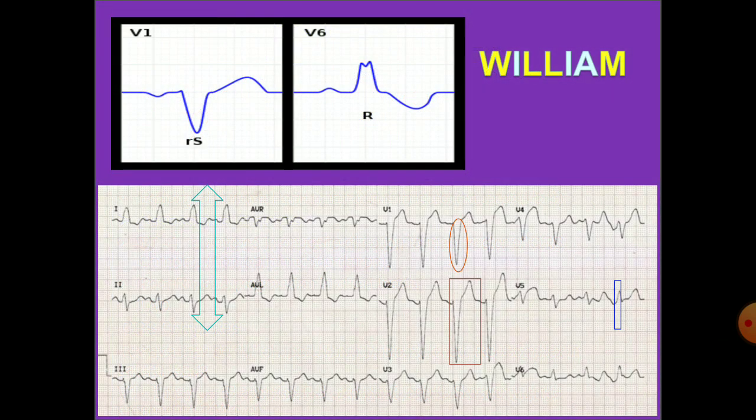For Left Bundle Branch Block, we have a mnemonic: WILLIAM. W represents the W pattern in V1, L represents Left Bundle Branch Block, and M represents the M pattern in V6. So: W, L, M.